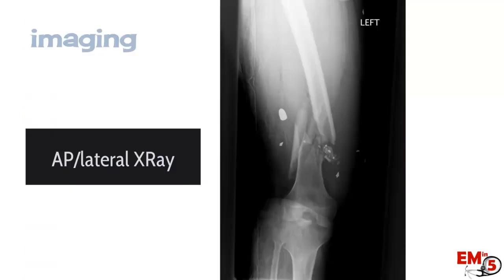For imaging, when a patient comes in you're going to get an AP lateral x-ray if you have any concern. From there you can talk to your trauma team, orthopedics, and vascular surgeons, and decide based on the x-ray and your exam if you need further imaging — for example CT scans or vascular studies — since a lot of this will be preoperative.